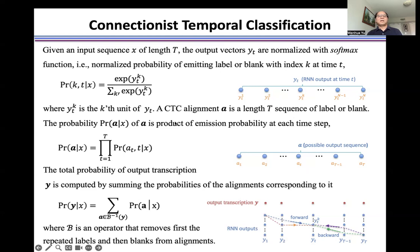The total probability of output transcription Y is computed by summing the probability of alignments corresponding to it in this formulation.